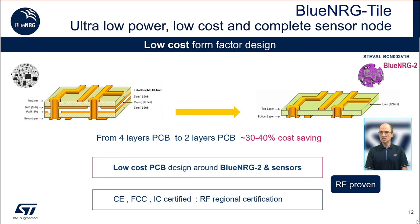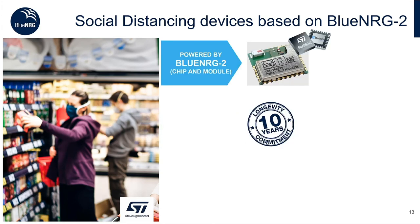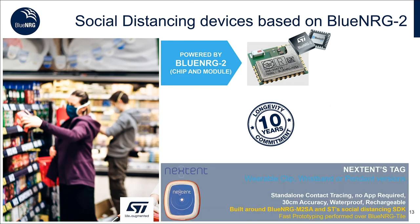In regards to success stories of social distancing applications, we have customers already designing around our BlueNRG-2 SoC and modules, which are part of our 10-year longevity commitment program, using our social distancing SDK. Among the products already available in the market, we have the Nexen tag, which comes in a waterproof wristband and pendant version. It is based on our BlueNRG M2SA module, uses our social distancing SDK, and is capable of achieving 30 centimeters of accuracy.